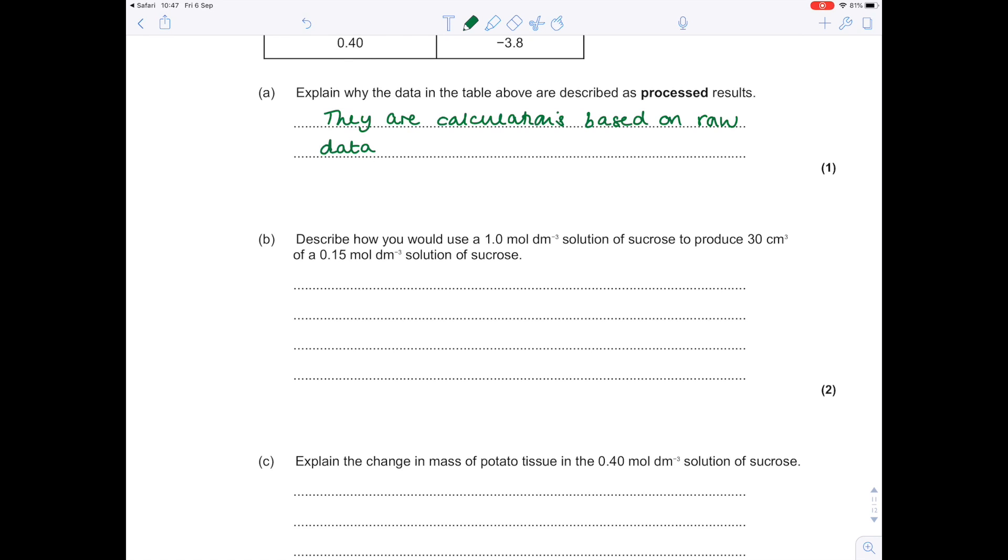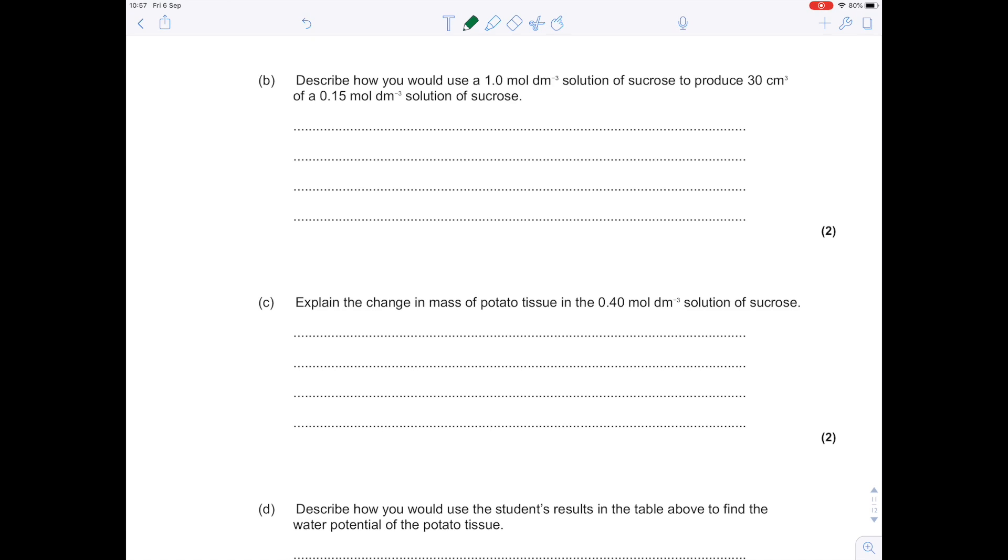Describe how you would use a 1 molar dm⁻³ solution of sucrose to produce 30 cm³ of a 0.15 mole solution of sucrose. The first thing you need to do is compare the new concentration required, which is 0.15 molar, with the original, which is 1 molar. Actually, the new concentration is 15% of the original concentration.